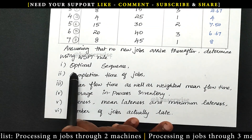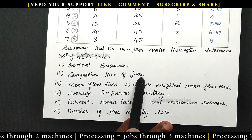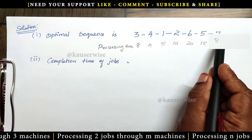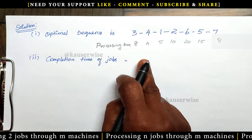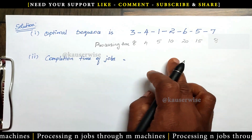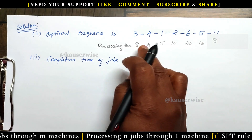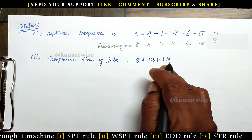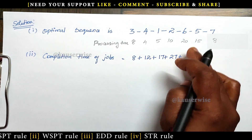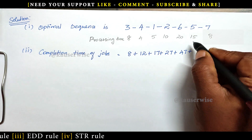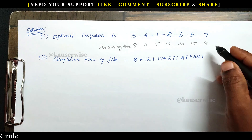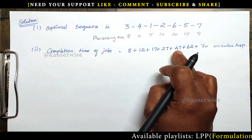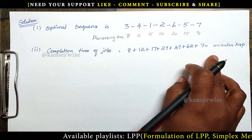Next we find the completion time of each job. The processing times are listed according to the optimal sequence. We find the cumulative values: 8, then 8 plus 4 equals 12, then 12 plus 5 equals 17, then 17 plus 10 equals 27, then 27 plus 20 equals 47, then 47 plus 15 equals 62, and finally 62 plus 8 equals 70 minutes. So the completion times are 8, 12, 17, 27, 47, 62, and 70 minutes respectively.